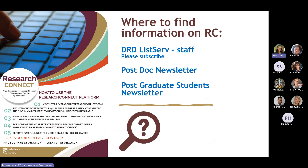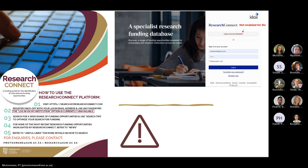You can find information on Research Connect several ways, either through the DRD's listserv emails — please subscribe to this as we also send out other funding calls via these emails. Information can also be found on the post-doc and post-grad students' newsletters. Please note that the single sign-on option is not currently enabled for Stellenbosch University, so please do not attempt to login via 'my institution'. Use your SU email address and password instead, which would be your original Open for Research password. If you do not remember the password, please follow the Forgot Your Password link.